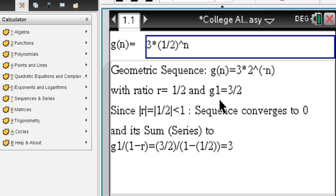Since a half is less than 1, the sequence converges to 0. And its sum, which is the summation of all the terms, converges to 3, using the formula g1 over 1 minus r.